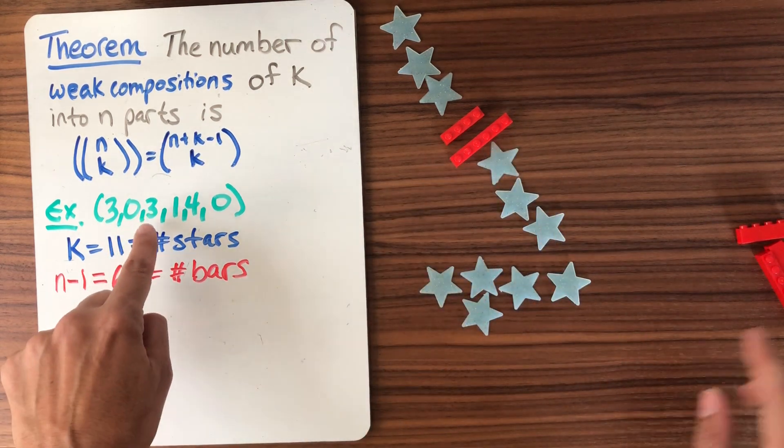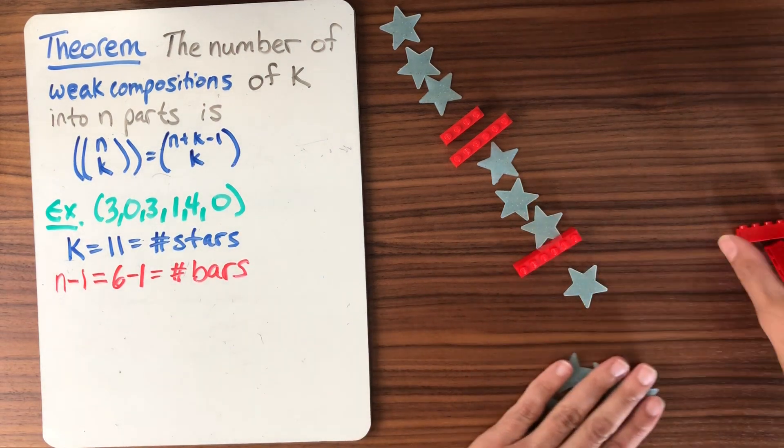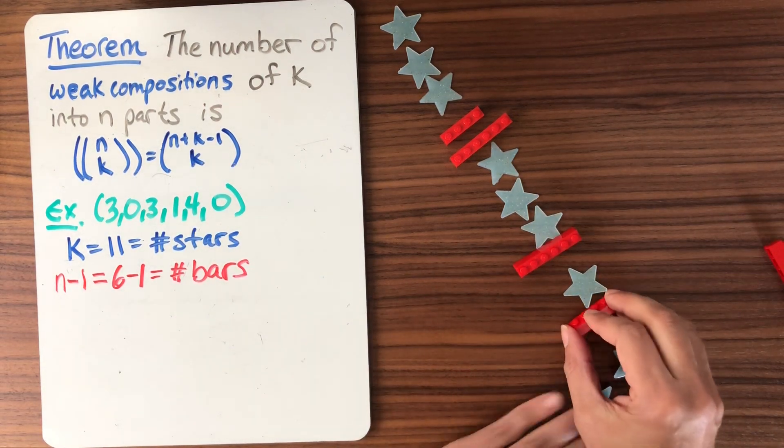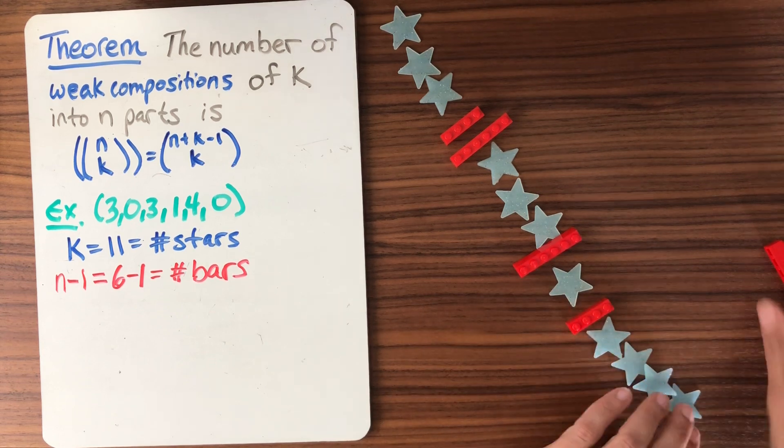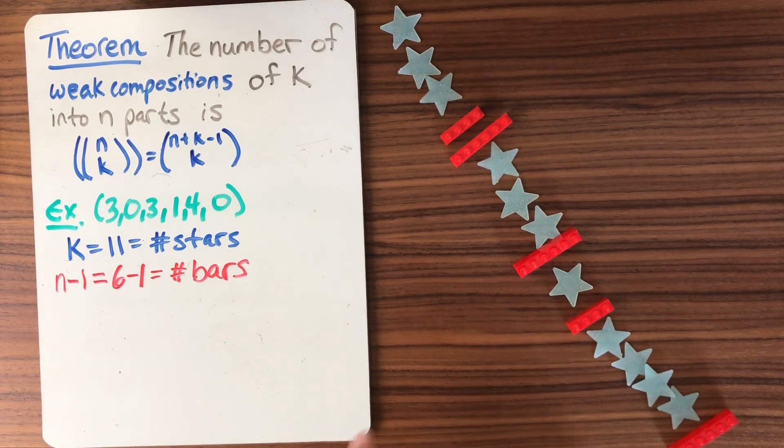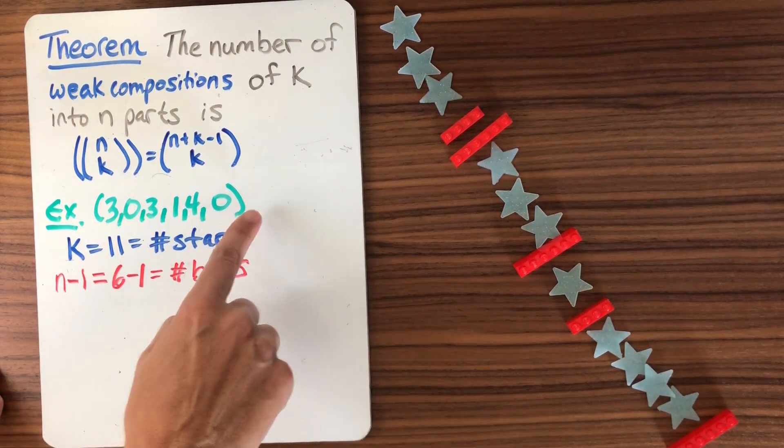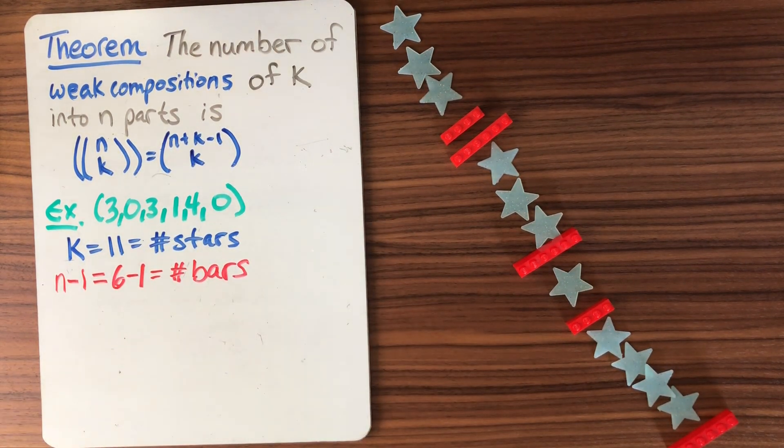So you see, I'm just reading the parts of my composition. And then I'm going to have a bar, one star, a bar, and then I have four stars, and then a bar, and no more stars. So the way that I would represent this composition in terms of stars and bars is exactly like this.